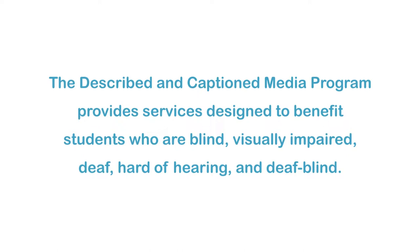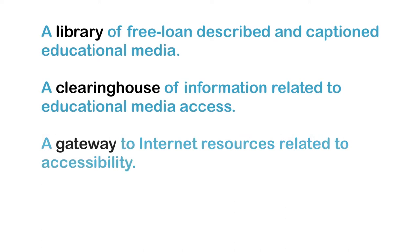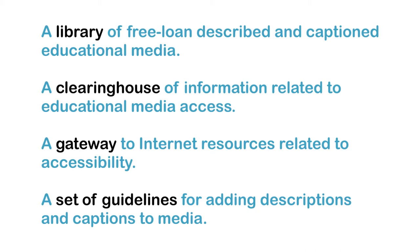The Described and Captioned Media Program provides services designed to benefit students who are blind, visually impaired, deaf, hard of hearing, and deafblind. These services include a library of free loan described and captioned educational media, a clearinghouse of information related to educational media access, a gateway to internet resources related to accessibility, and a set of guidelines for adding descriptions and captions to media. There are no user registration or service fees. Visit the DCMP at DCMP.org. The DCMP is funded by the U.S. Department of Education and administered by the National Association of the Deaf.